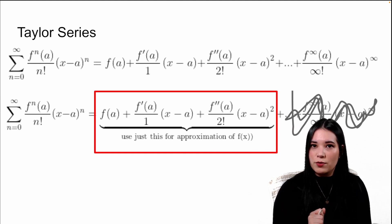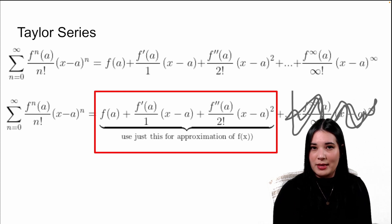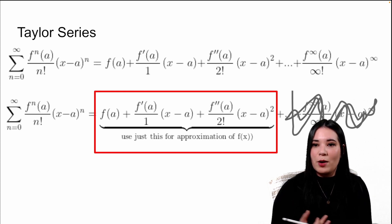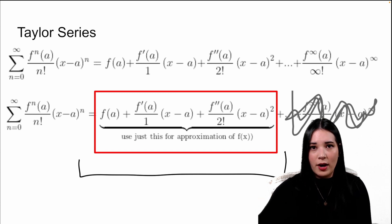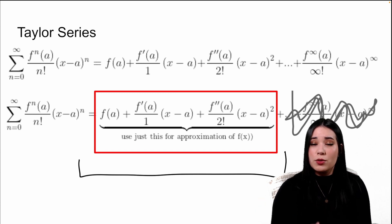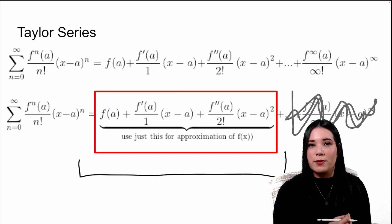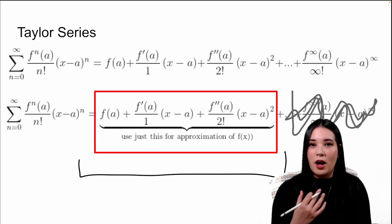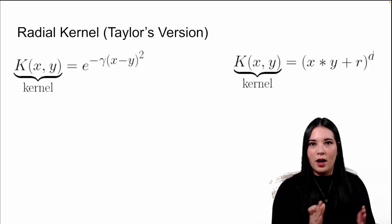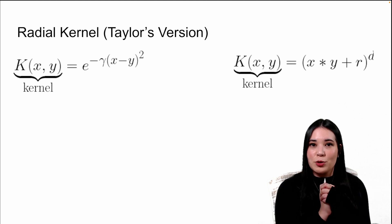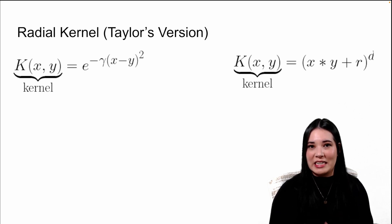One really useful application of Taylor series, even though it's not what we're doing with them here, is that we can take only the first few of those infinitely many parts and use it as an approximation for our function, which is often simpler than our actual function. Alright, let's get down to proving that our radial kernel is actually projecting data into infinite dimensions.